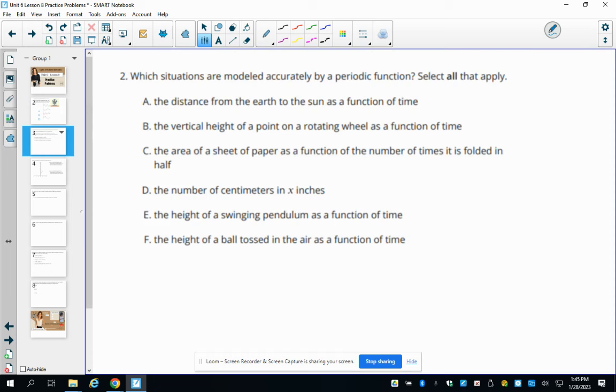Number two, which statements are modeled accurately by a periodic function? Select all that apply. So which ones of these are periodic? The distance from the earth to the sun is a function of time. That's true. That changes throughout the year and then repeats. The vertical height of a point on a rotating wheel as a function of time? Yes, repeats itself.